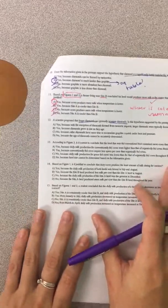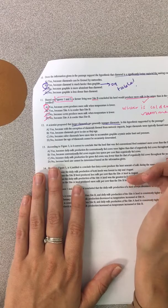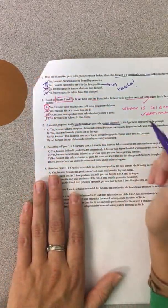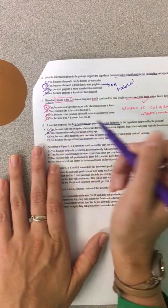So let's see our answer choices for this one. So yes, with the exception of diamonds formed from meteoric impacts, larger diamonds are typically formed more recently. That one actually matches our table, so we won't count that one out. Yes, because diamonds grow in sizes they age. They don't say that.